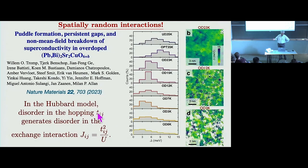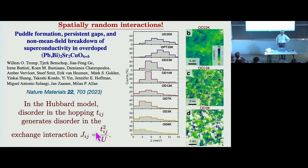What is the source of this interaction disorder? One way to think about it: we are accustomed to putting disorder in the hopping or on-site energies as in the Anderson model, but now we have a strongly coupled system. This disorder in the hopping will lead to disorder in the exchange interaction via the famous relation J equals t-squared over U, so you really have to allow for disorder in J. This is non-perturbative — U is in the denominator.